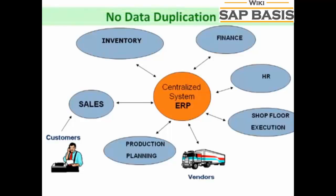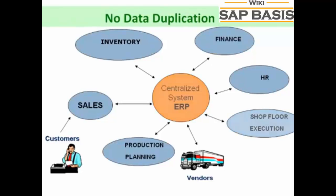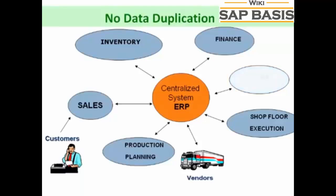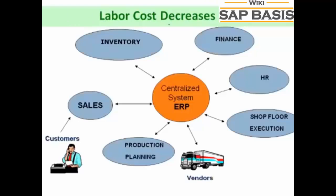Thus, data duplication is avoided and accurate data is made available. The shop floor team updates their manpower status regularly in the central database, which can be accessed by the HR department. In case of a shortage of workforce, the HR team starts the recruitment process with considerable lead time to hire a suitable candidate at market price. Thus, labor costs go down.